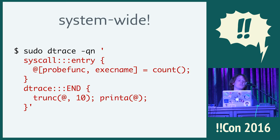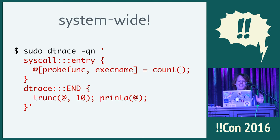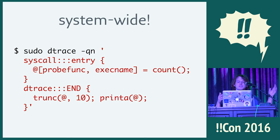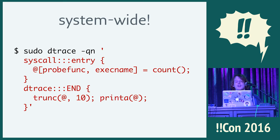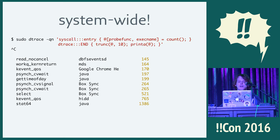So what kinds of things can you do with DTrace? This is what the DTrace language looks like — sort of like awk. I believe this is at least the third mention of awk today, which blows my mind. A little bit like awk, a little bit like C. This program traces two kinds of events: system calls and the DTrace system itself ending. What we're doing is counting up all the system calls on the computer, grouped by the name of the syscall — probe func — and the name of the program that called it. Then when you control-C to end DTrace, it truncates the results to the top ten and prints them out.